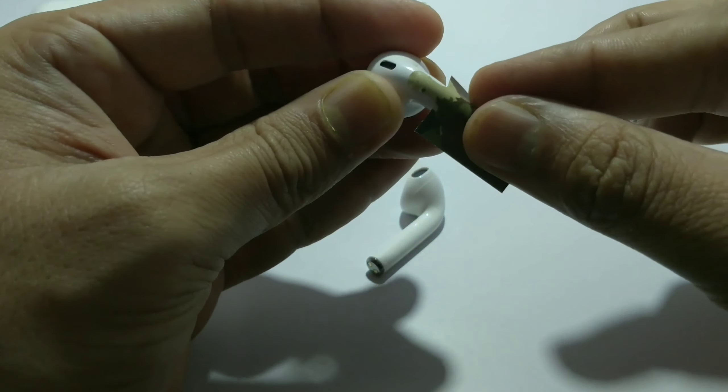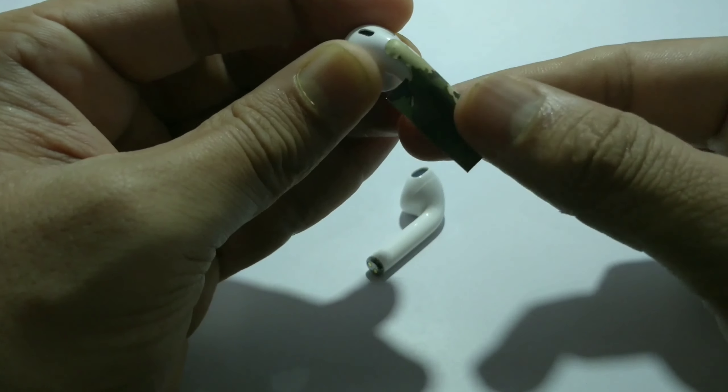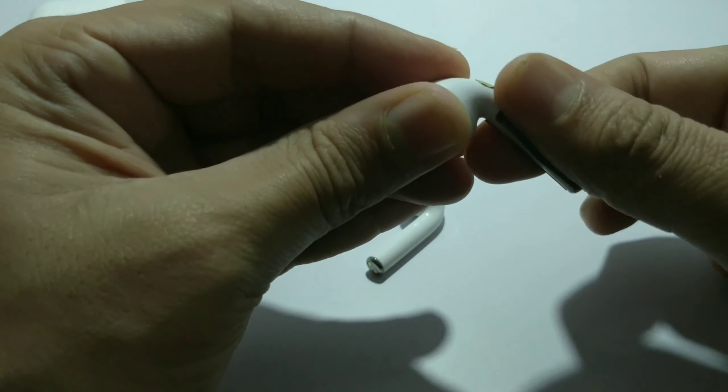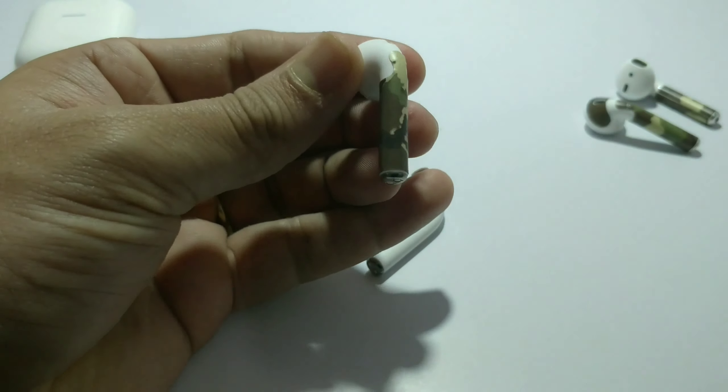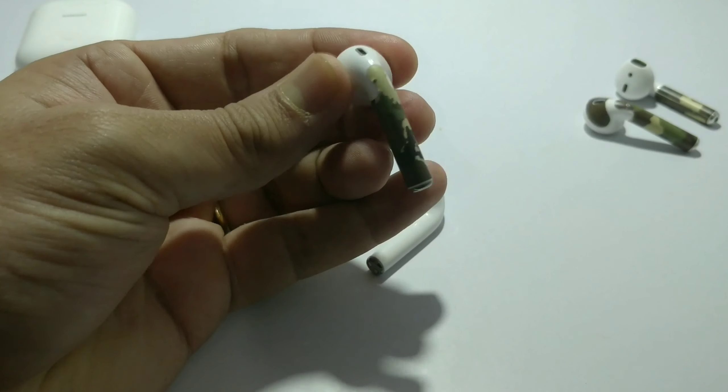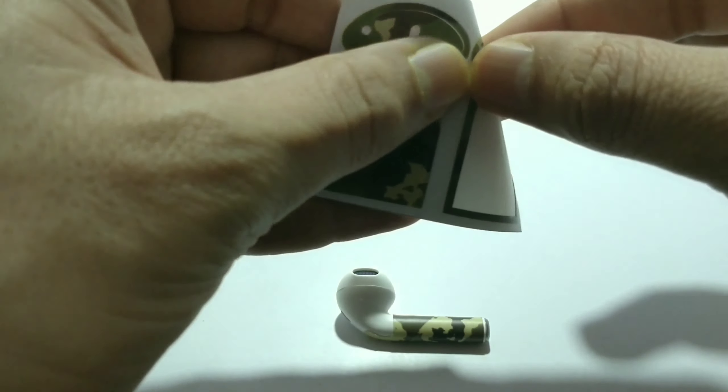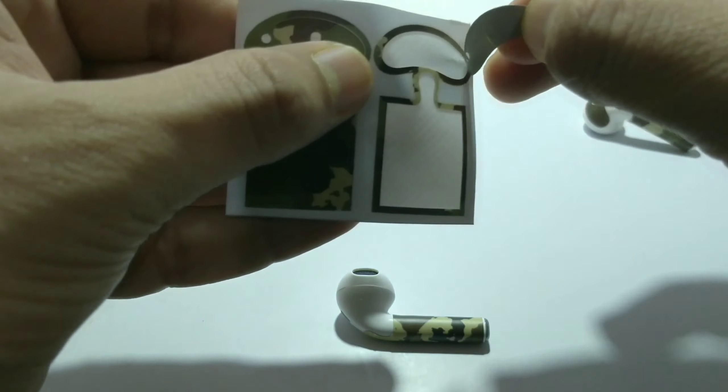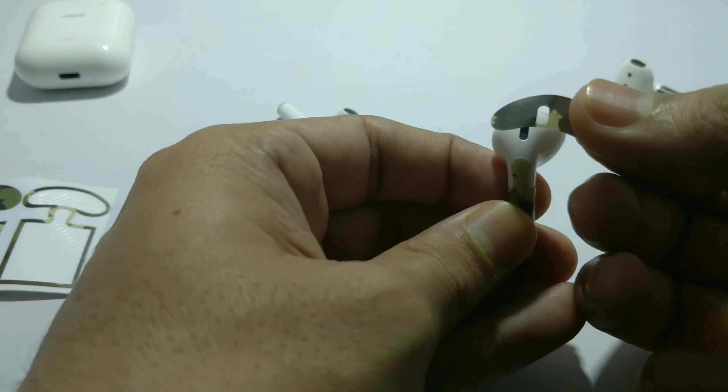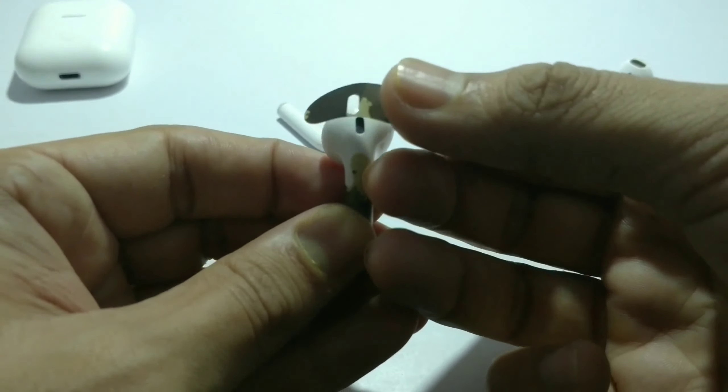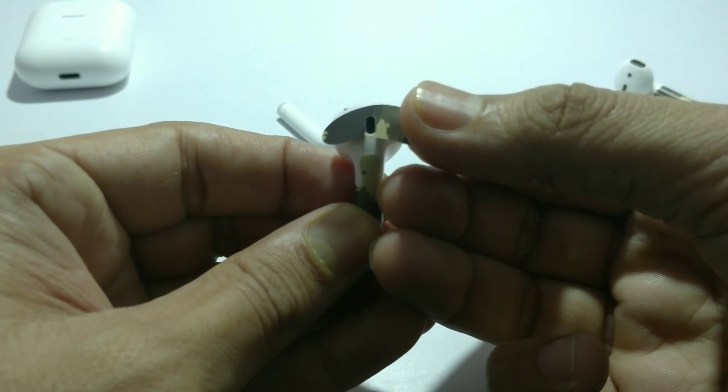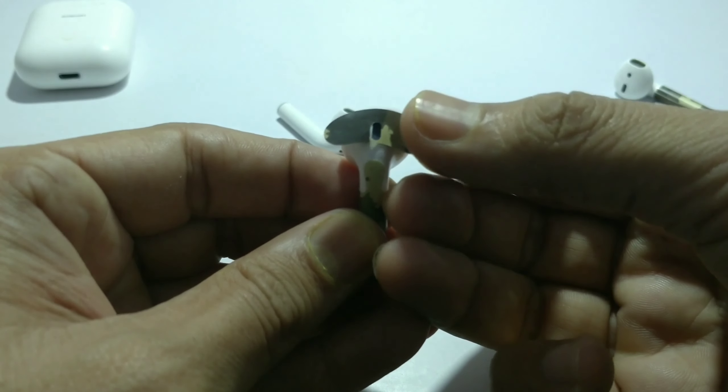Now let's paste the other earbud. Let's peel it off gently as we did earlier. Adjust the hole with the AirPods and paste it gently just like this.